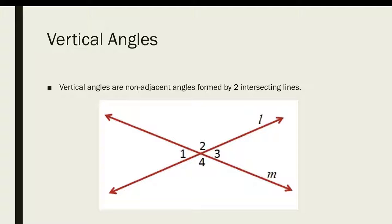Vertical angles. Vertical angles are non-adjacent angles formed by two intersecting lines. In this case, angles 1 and 3 are a pair of vertical angles, and angles 2 and 4 are a pair of vertical angles.